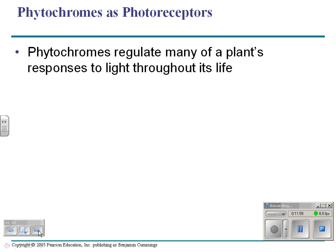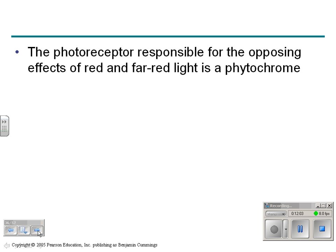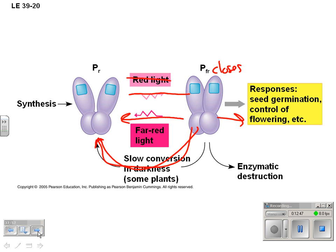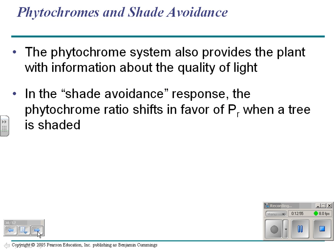Phytochromes are in charge of many of a plant's responses, specifically the opposing effects of red and far-red light. When a phytochrome is exposed to red light, it changes configuration — it's like a switch, and it closes. To open it again, it has to be exposed to far-red light or darkness. Closing the switch causes something to happen; opening the switch stops it — the same as turning an electrical switch on and off.